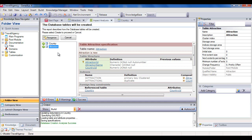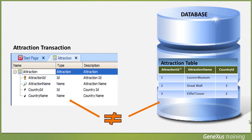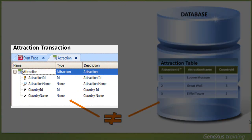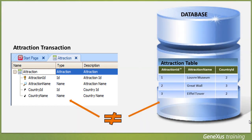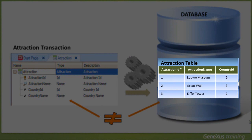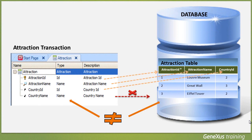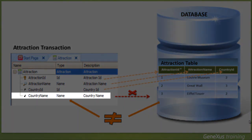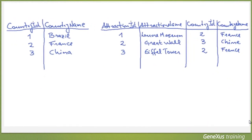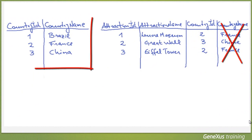Note that in the attraction physical table that will be created by GeneXus, the country name attribute is not included, even though we had included it in the attraction transaction structure. This happens because the transaction concept is not the same as the physical table concept. Remember that a transaction is the GeneXus object created in the knowledge base to represent an object of reality, and examining it, GeneXus creates a physical table in the database to store the data. Not all attributes included in a transaction structure will be stored in the physical table — storing the country name in several physical tables would mean storing duplicate data. Instead, the country name can be retrieved from a single location, that is, from the country table.